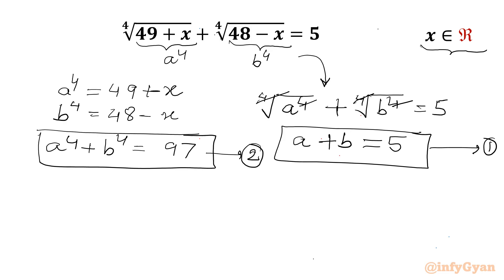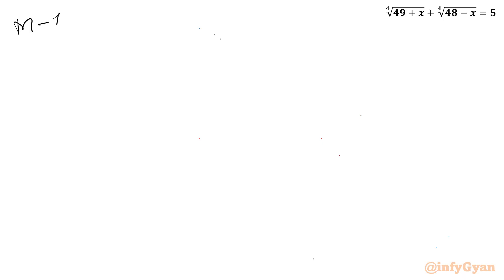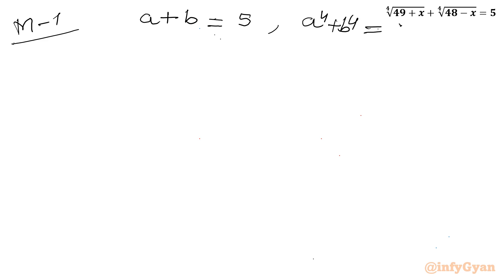Now I will solve this system in two different ways. Let me write Method 1. We have a + b = 5. Let us consider ab = t.